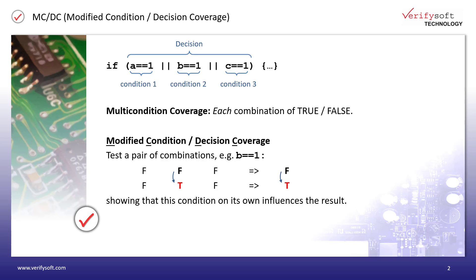First, let's look at a simple line of code where a decision needs to be made based on a combination of atomic conditions. We can see inside the IF three independent atomic conditions where the variables A to C are compared against the value 1. All these three conditions are combined by logical OR so that if at least one condition evaluates true, the overall decision would also evaluate true.